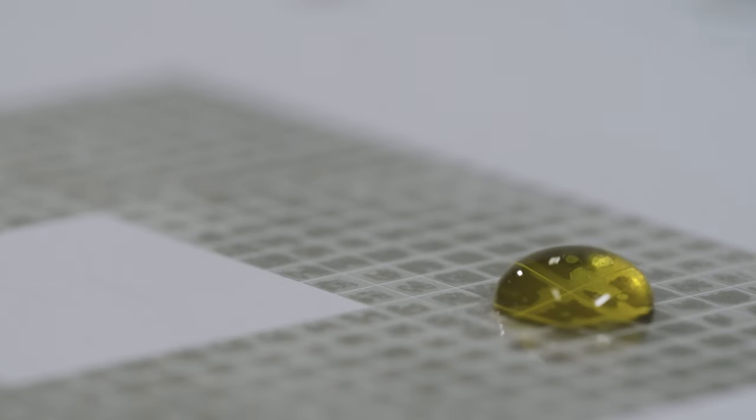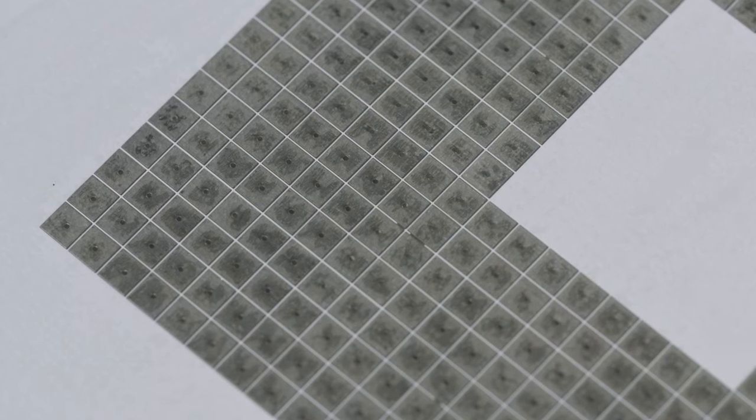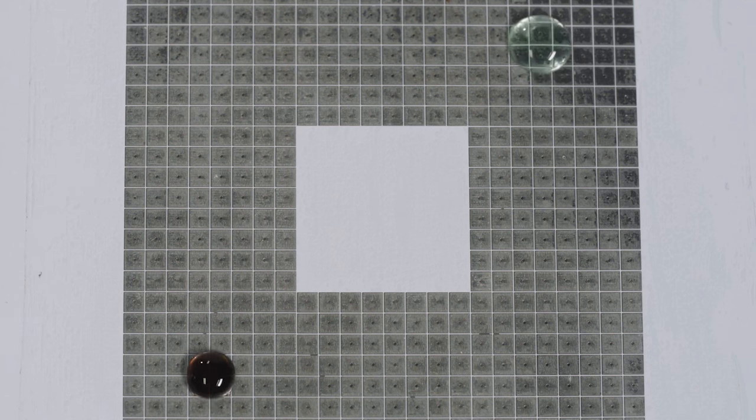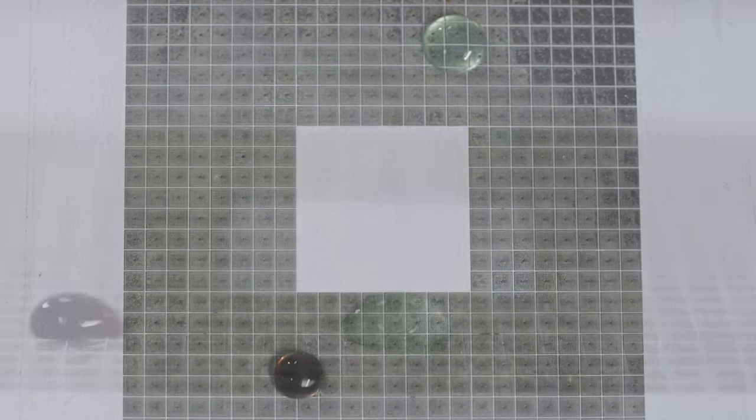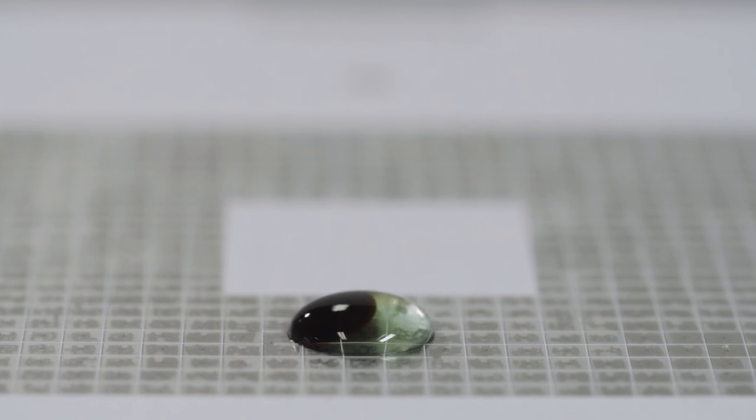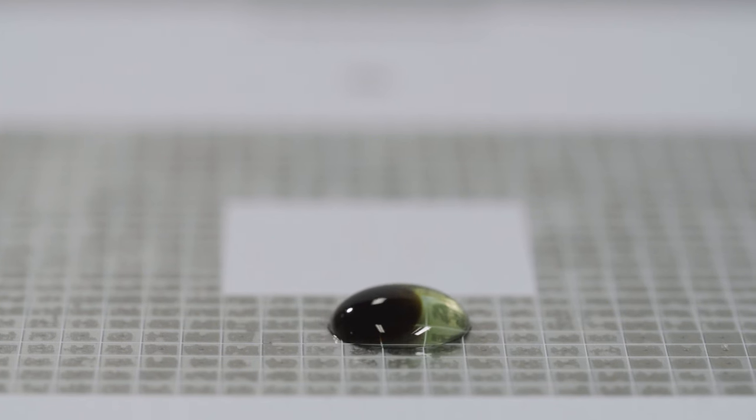So fundamentally, what we are doing in our chip is to charge and discharge tiny metal plates. Charging and discharging of these metal plates attracts and repels tiny droplets. And by sequentially turning on and off these metal electrodes, you can gently shuttle a drop from one location to another.